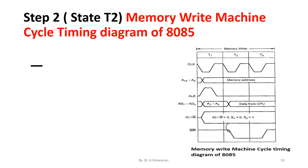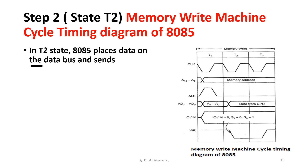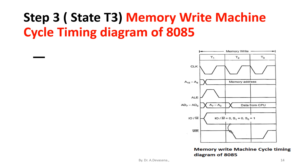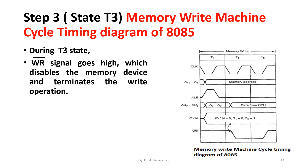T2 state: the 8085 places data on the data bus and sends the Write bar signal low for writing into the addressed memory location. This process is indicated here. During T3 state, the Write bar signal goes high, which disables the memory device and terminates the write operation. The Write bar signal going high during T3 state is indicated here.